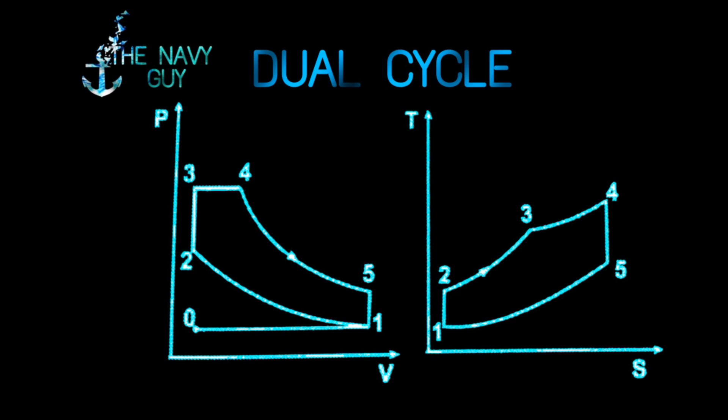From 3 to 4, remaining heat added is at constant pressure. So it is a combination of both constant volume and constant pressure. From 4 to 5, air is expanded isentropically. And from 5 to 1, heat is rejected at constant volume.